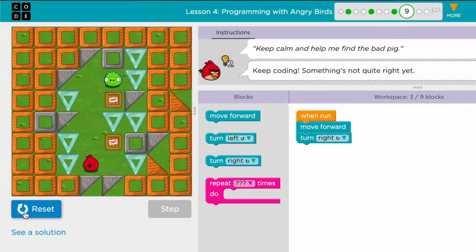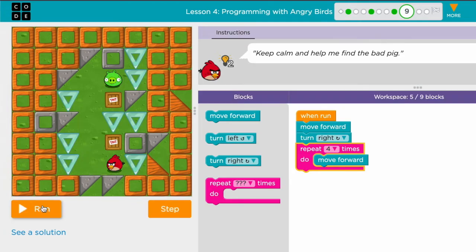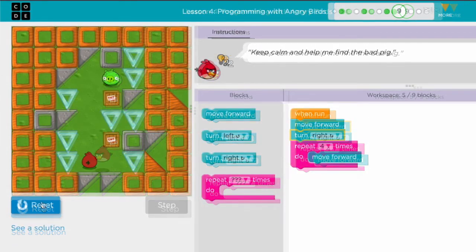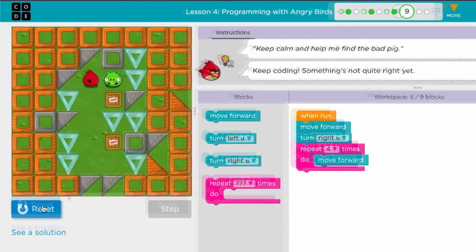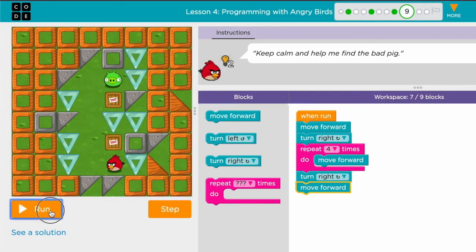Now I need to think of the repeat block, so let's check it out. Repeat and I'm going to check - one, two, three, four - so move forward four times. Repeat move forward, which means when I run it, and then I turn to the right, then one time move forward, and I'm done.